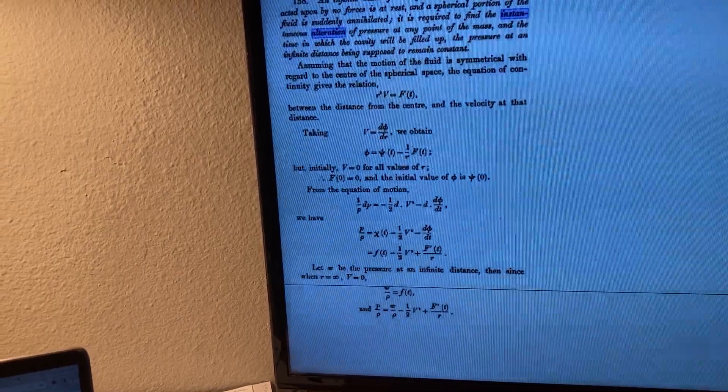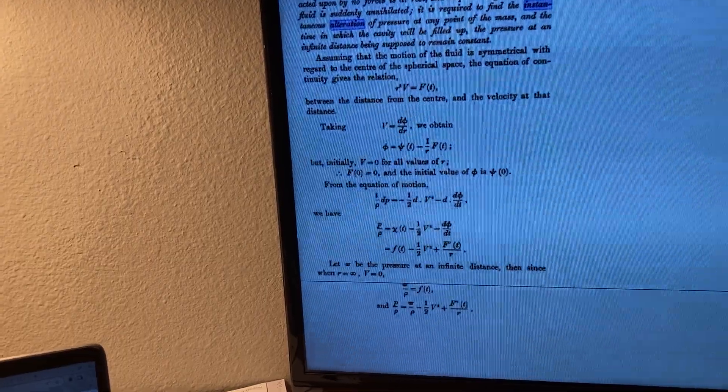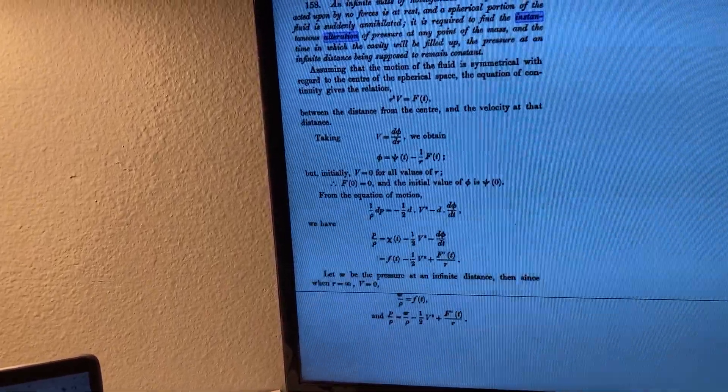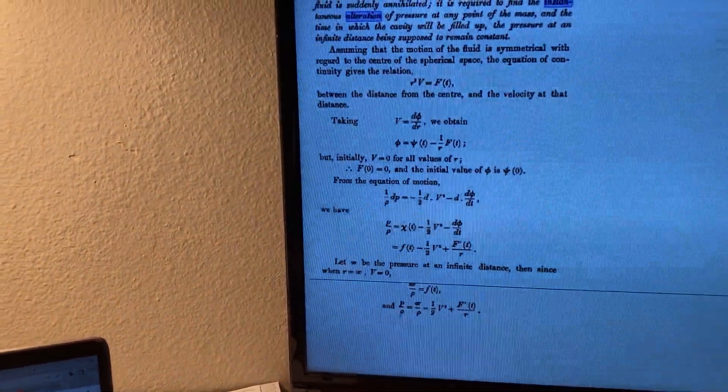Then Lord Rayleigh integrated and simplified the equation to get time as a function of the sphere's volume, the density of the liquid, and the pressure far away from the bubble.